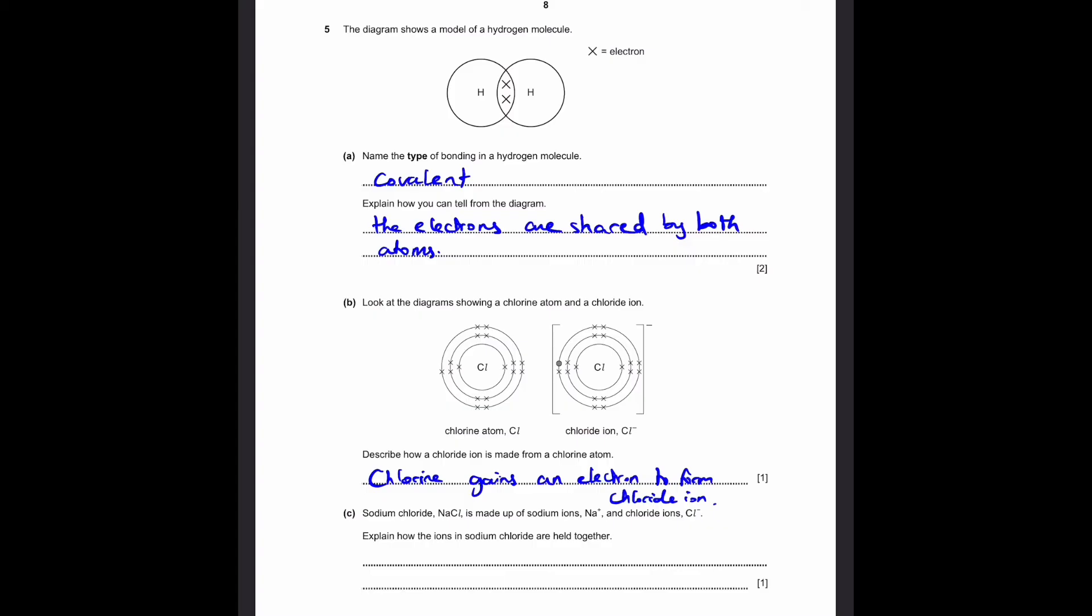Part C: Sodium chloride NaCl is made of sodium ions Na+ and chloride ions Cl-. Explain how the ions in sodium chloride are held together. Well, we know that sodium has a positive charge and chlorine has a negative charge. So, the ions in sodium chloride are held together by electrostatic forces of attraction between these two ions. Electrostatic forces of attraction between the Na+ and Cl- ions.